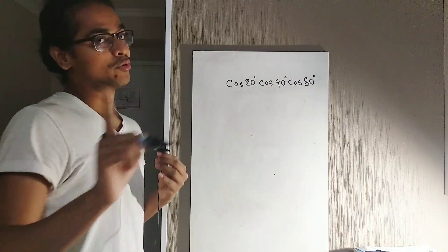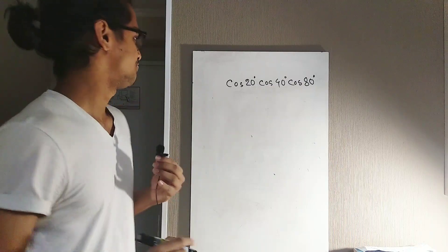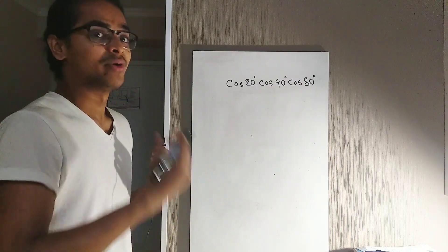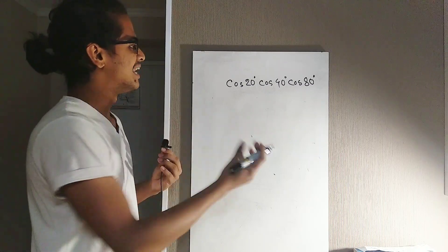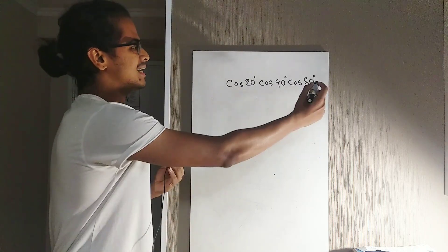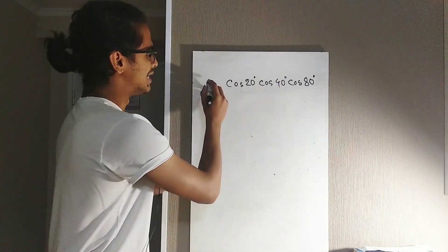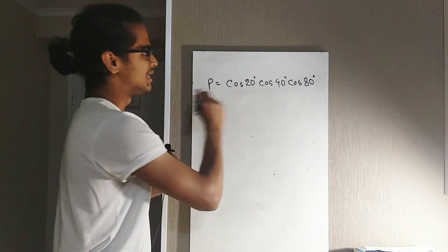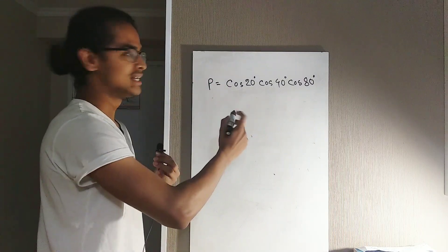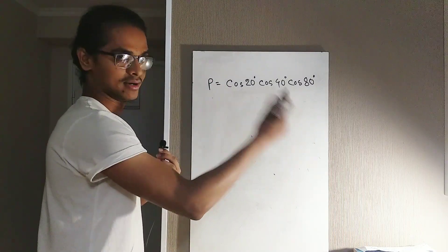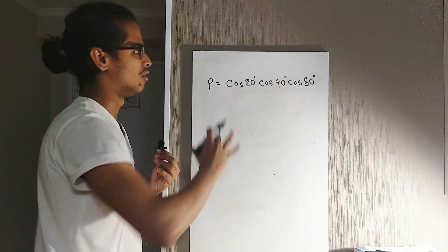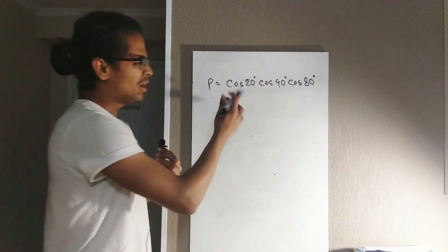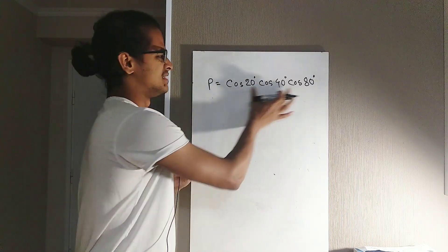So what I'm going to do is assume the value of this trigonometric expression to be P. Let's say P equals cos 20° times cos 40° times cos 80° — the multiplication of all these terms.